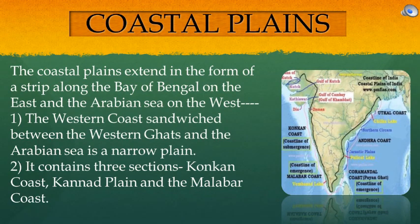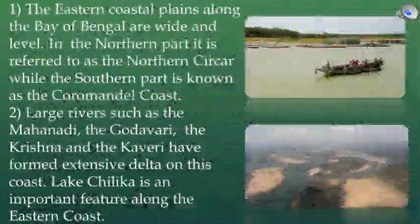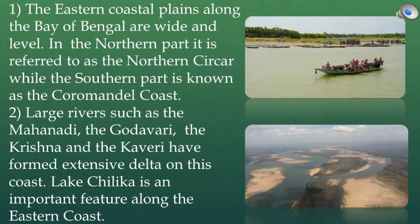The coastal plains extend in the form of a strip along the Bay of Bengal on the east and the Arabian Sea on the west. The western coast, sandwiched between the Western Ghats and the Arabian Sea, is a narrow plain. It contains three sections: the Konkan coast, the Kannad plain and the Malabar coast. The eastern coastal plains along the Bay of Bengal are wide and level. The northern part is referred to as the Northern Circar, while the southern part is known as the Coromandel Coast. Large rivers such as the Mahanadi, Godavari, Krishna and Kaveri have formed extensive deltas on this coast. Lake Chilika is an important feature along the eastern coast.